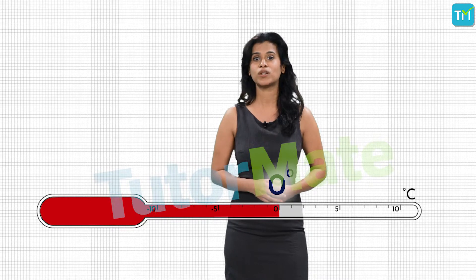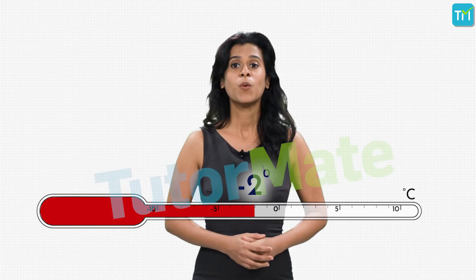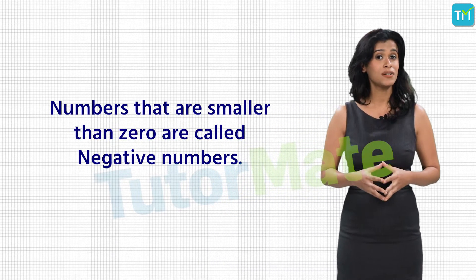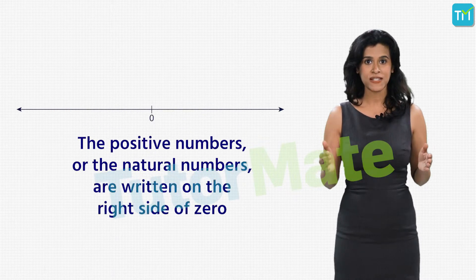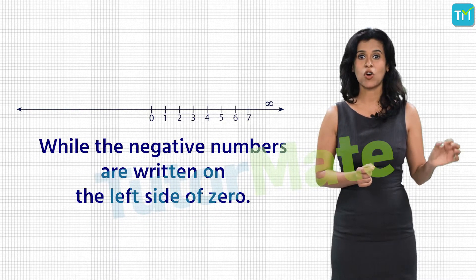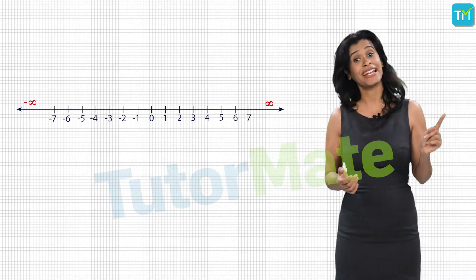Counting down: 5, 4, 3, 2, 1 — we reach 0 degrees, but we still have to go 2 degrees further left on the scale, meaning the temperature falls below 0. Go 1 degree below 0 and you get minus 1 degree; another degree below that gives minus 2 degrees. So 7 degrees below 5 degrees Celsius gives a temperature of minus 2 degrees Celsius. These numbers that are smaller than 0 are called negative numbers. On the number line, positive numbers are on the right side of 0 while negative numbers are on the left side.